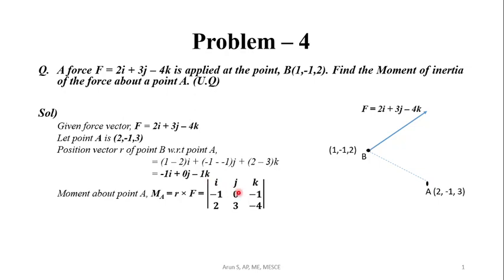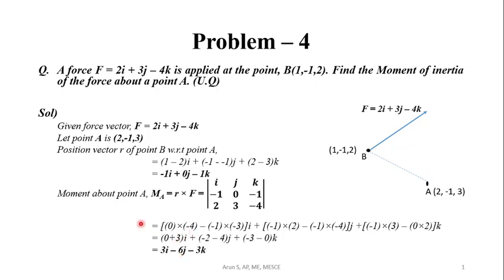Expanding the determinant: i[(0)(-4) - (-1)(3)] - j[(-1)(2) - (-1)(-4)] + k[(-1)(3) - (0)(2)]. Finally, we find the moment about point A as M_A = 3i - 6j - 3k.